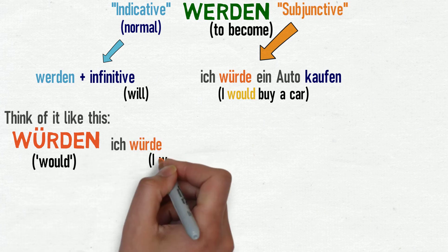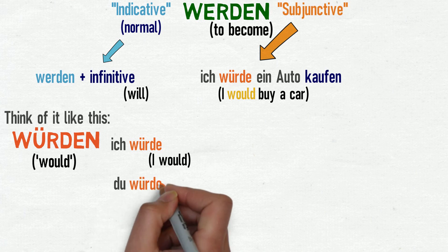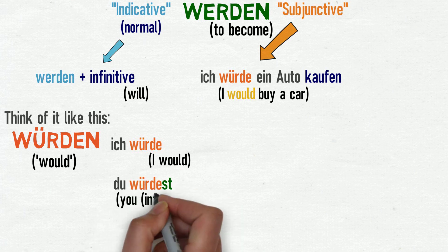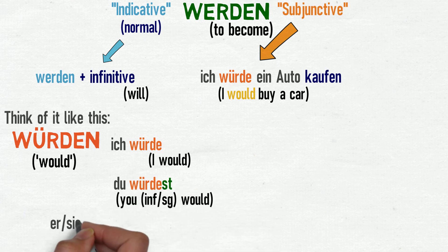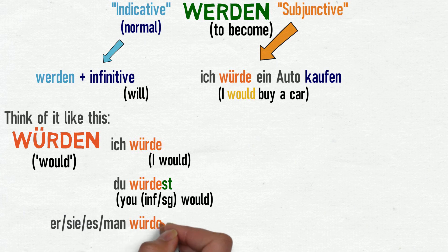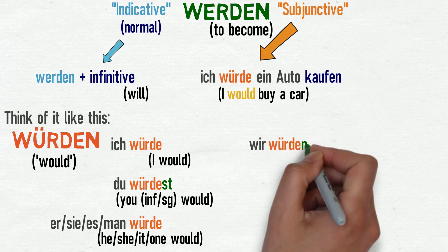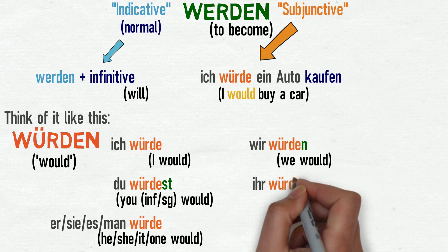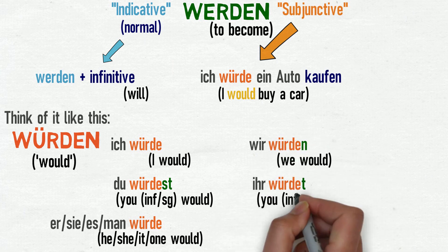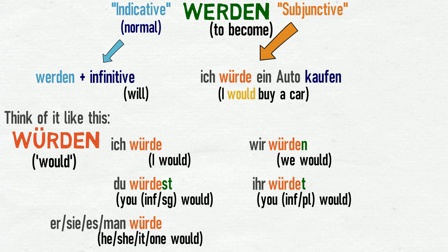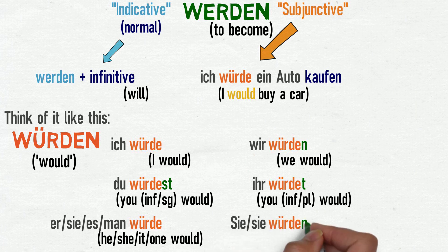Ich würde — I would. Du würdest — you (informal singular) would. Er, sie, es, man würde — he, she, it, one would. Wir würden — we would. Ihr würdet — you (informal plural) would. And sie würden / Sie würden — they would, or you (formal) would.